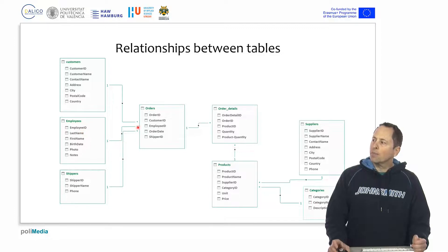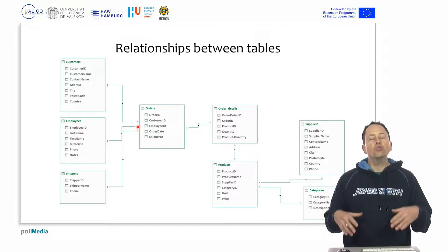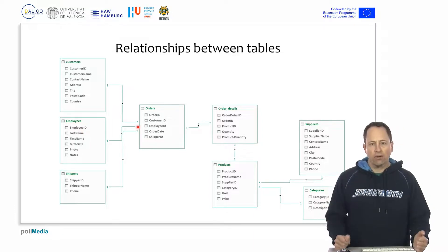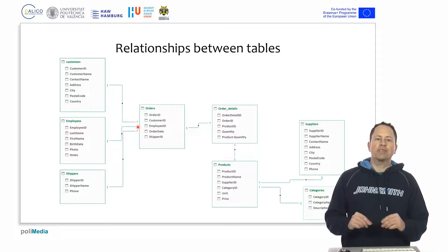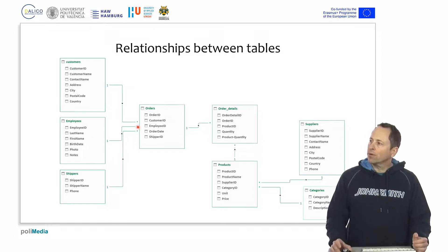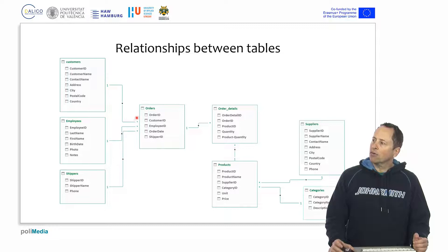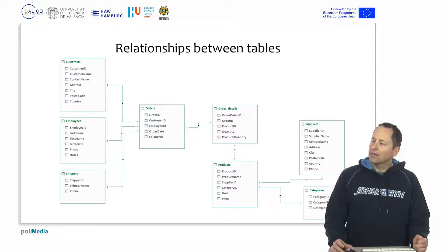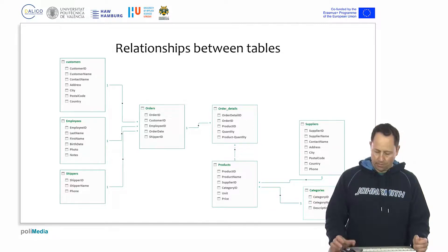We could have put it all on the same table, but that would create a lot of redundant information and we would also lose flexibility. In this way, we can take together any number of related tables and summarize the data of several tables at the same time, in a very flexible way and without having the information repeated.